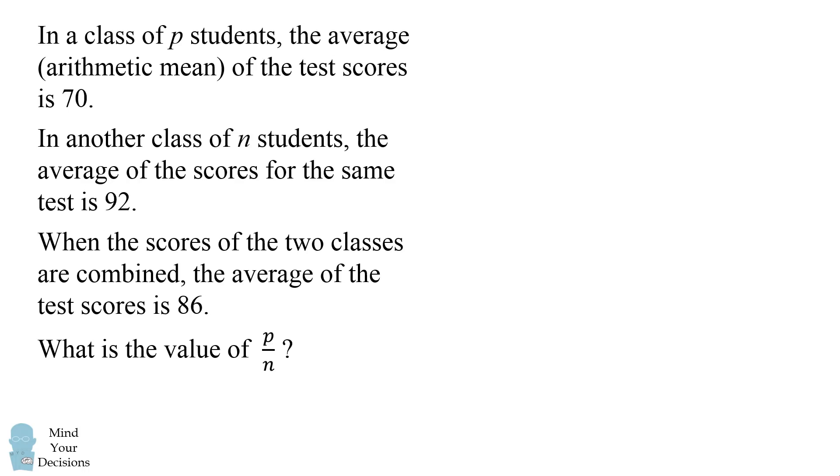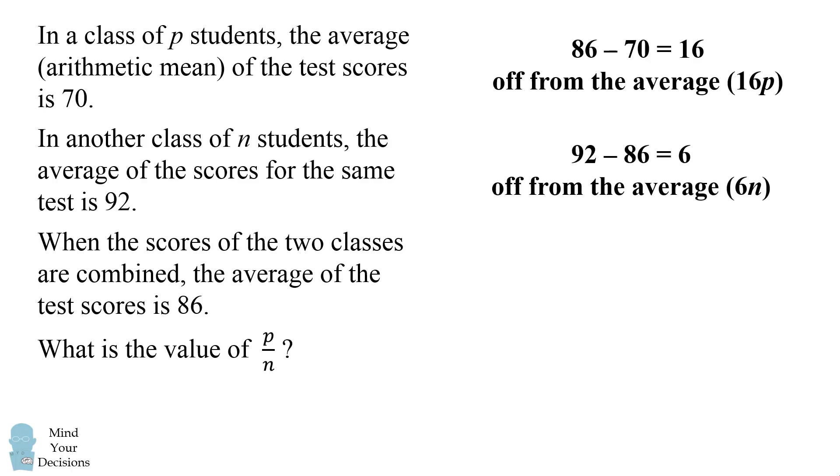From the first sentence, notice that the average in the class of P students is 70. Now 86 minus 70 is equal to 16. So this class is 16 off from the average, and there are P students. So the difference is 16 times P. In the second class, the average is 92, which is 6 above the average. And this class has n students, so we have 6 times n.